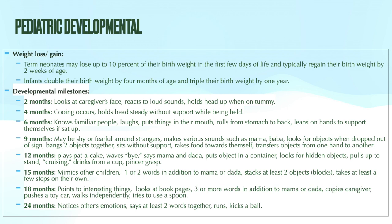Term neonates, those born at term, can lose up to 10% of their birth weight in just the first few days of life. However, they typically regain and reach their birth weight by two weeks of age. Generally, infants should double their birth weight by four to six months, and by one year of age they should triple their birth weight. There are also some milestones here for normal development that you'd definitely want to review, because you'll probably see a question or two on those as well.